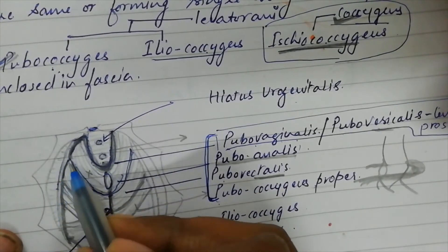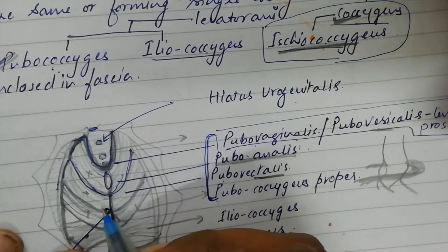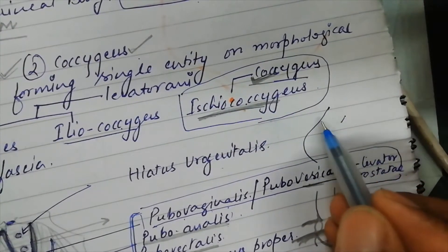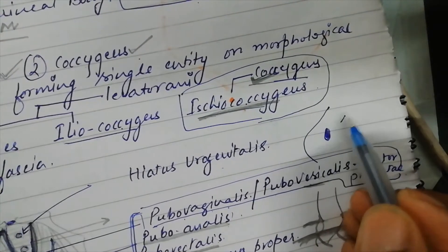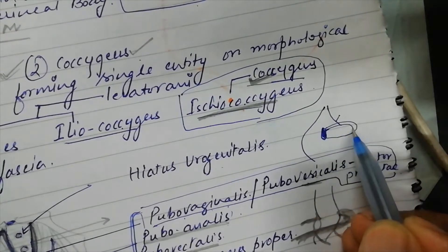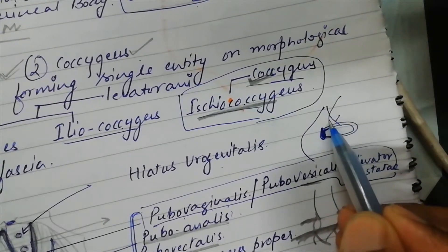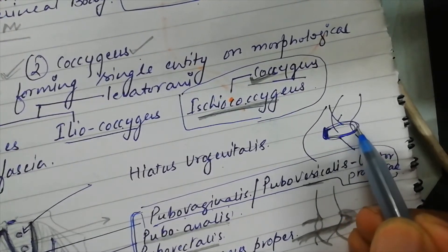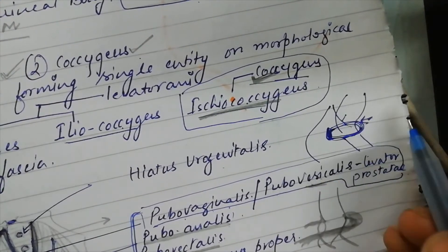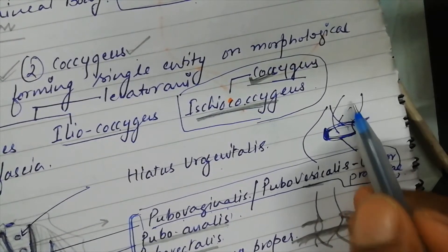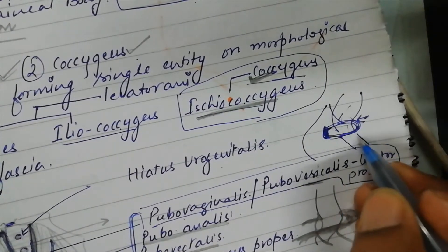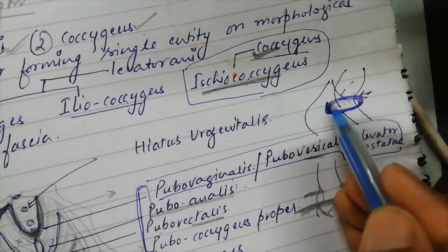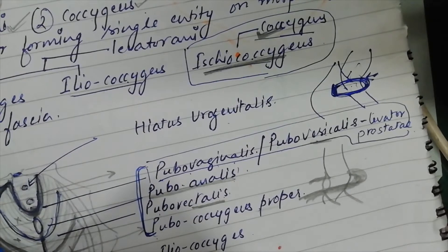The puborectalis component originates from the anterior part of the white line and forms a sling around the rectum, pulling the rectum anteriorly. Suppose this is the pubic symphysis — the pull of this puborectalis muscle creates a curvature and pulls the anorectal junction anteriorly, holding the fecal matter above. Involuntary descent of fecal matter is thus controlled by the puborectal sling.